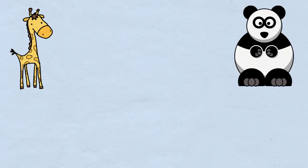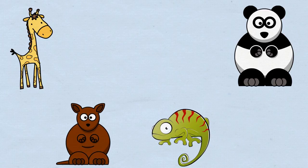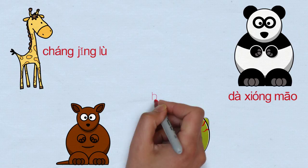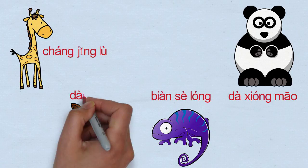In the animal kingdom, the Chinese looked at all animals with a fresh look, coming up with some pretty original descriptions, like long-necked deer, big bear cat, changing color dragon, or pocket mouse.